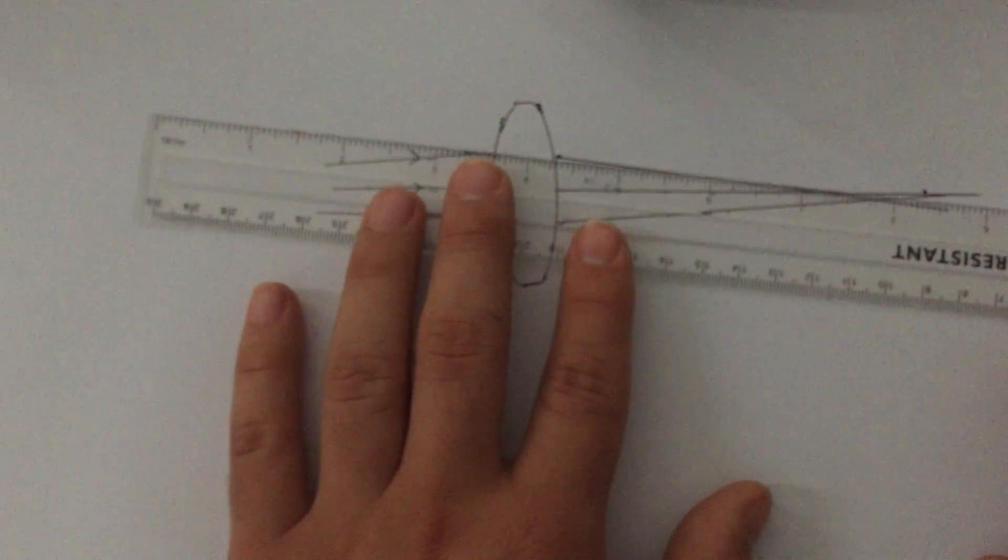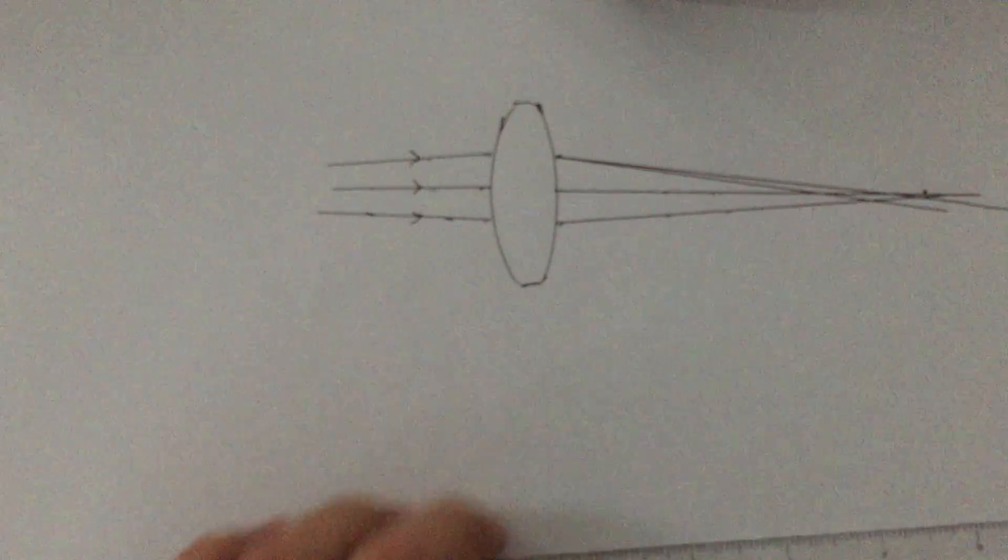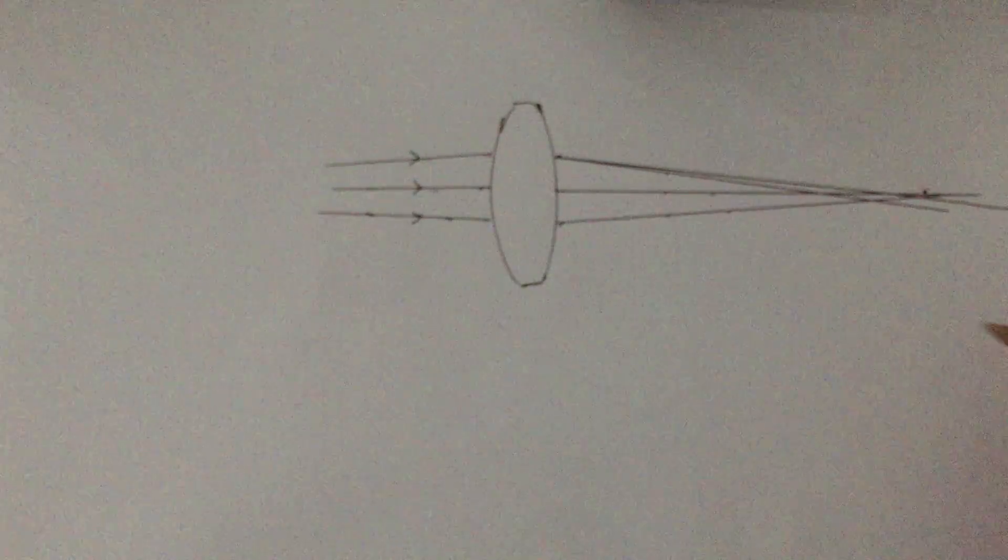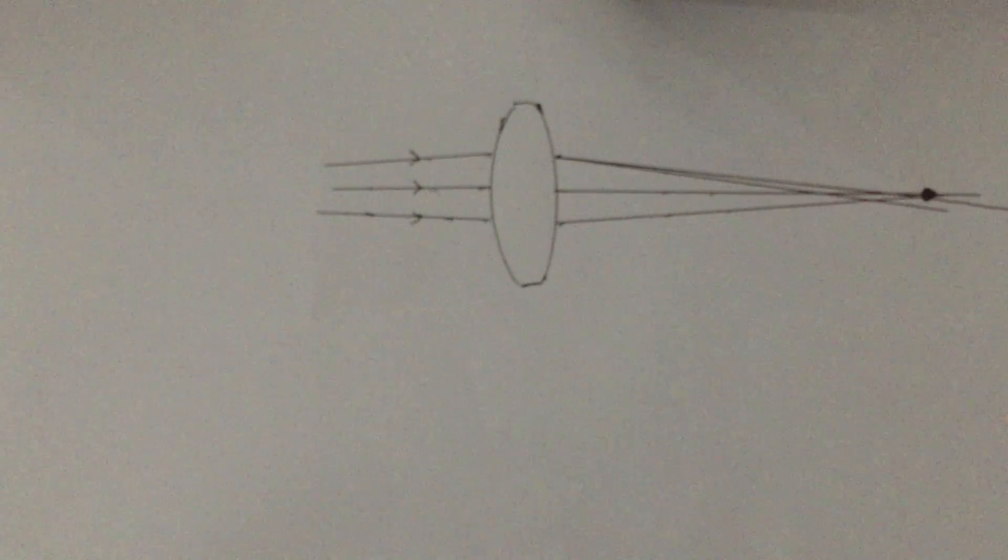A little bit dodgy. Let's just do that again. They should all cross at the same point. Sorry for my mistake there. They all cross over at this point here, which I'm just going to put a big fat circle on so you can see.